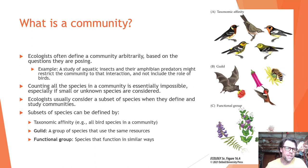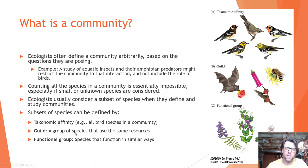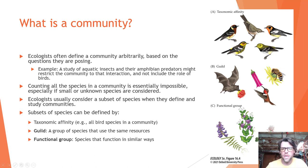Ecologists usually consider a subset of species when they define and study communities. They may think about a subset by their taxonomic affinity — for example, all the bird species in the community. A guild is a group of species that use the same resource, such as all species in a forest that use flowers — a bat, a hummingbird, and a bee. Functional groups are species that function in similar ways, for example all nitrogen-fixing plants.